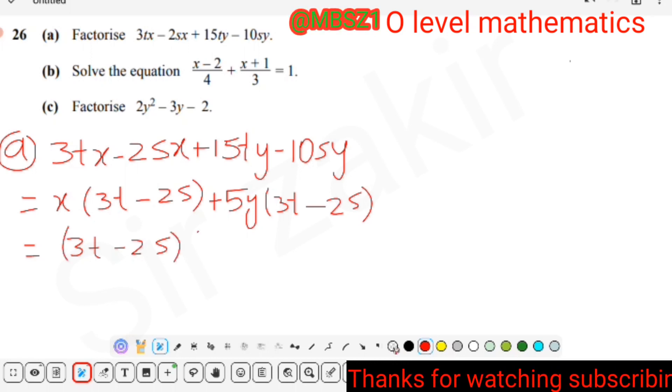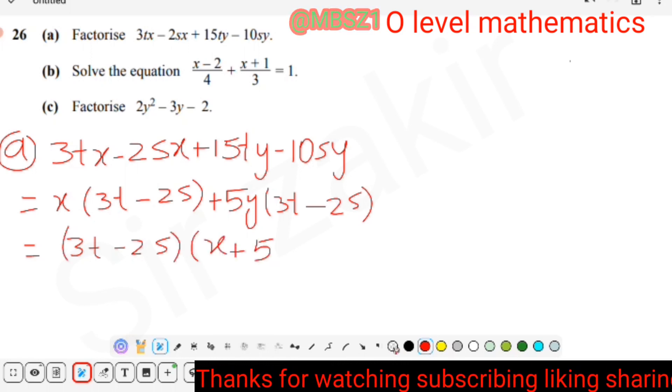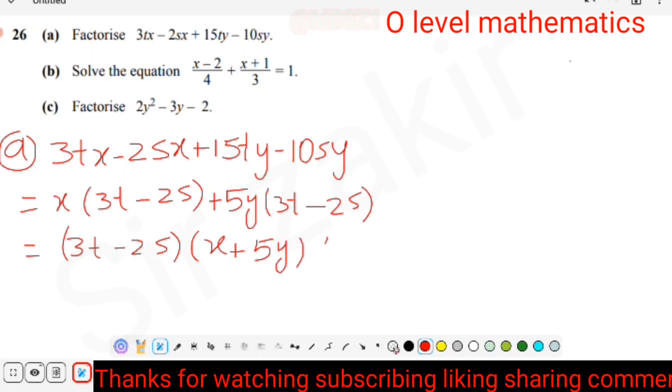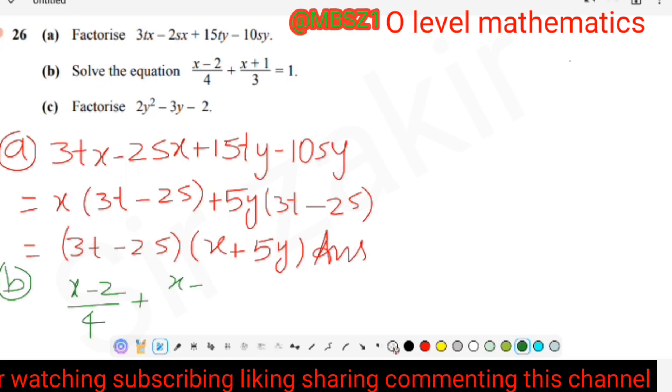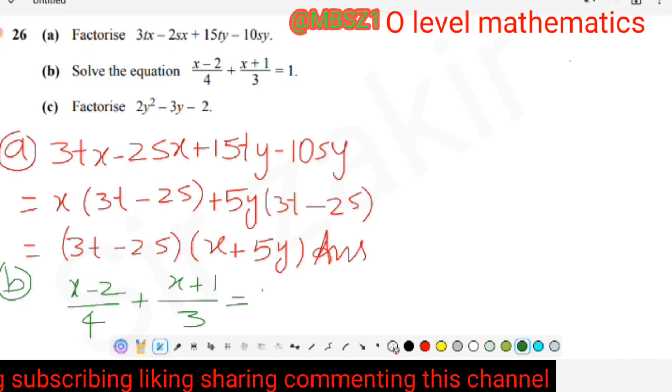Now we move to part B. It is (X - 2)/4 + (X + 1)/3 = 1. In order to make denominator the same, we multiply and divide the first fraction by 3 and second fraction by 4.